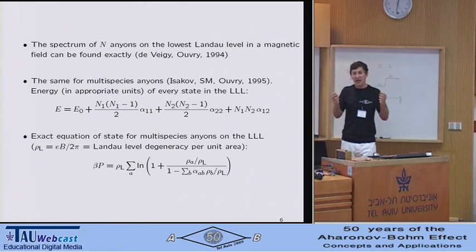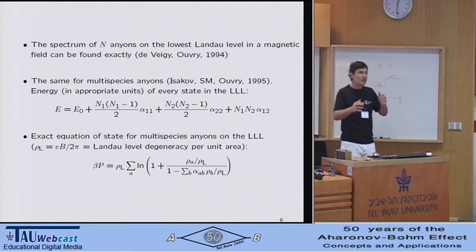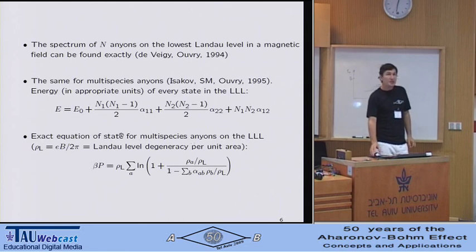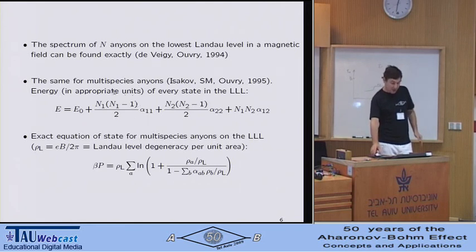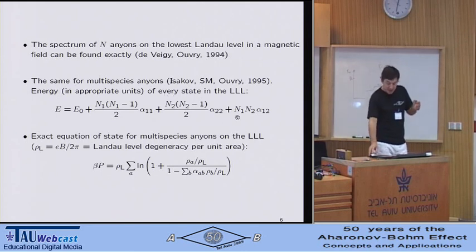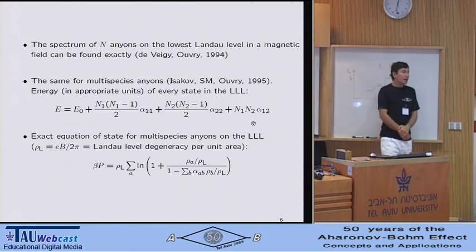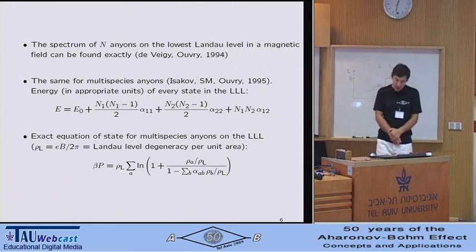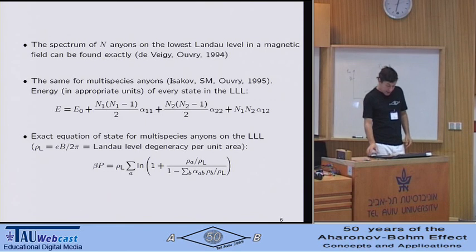As it turns out, the statistical interaction between the particles of the same or different species is, loosely speaking, a pairwise effect because from this expression here, you can see that the effect, the change in the energy that statistics brings about is the number of pairs of particle of species one times the corresponding statistical parameter plus the same for species two plus the number of cross-species pairs times the cross-species statistics parameter.